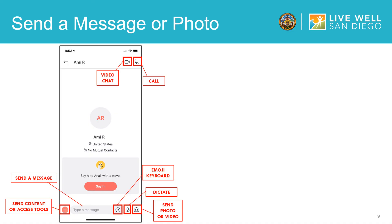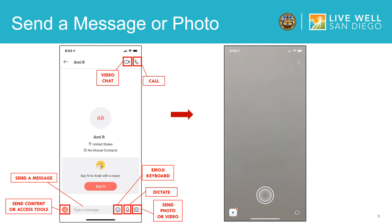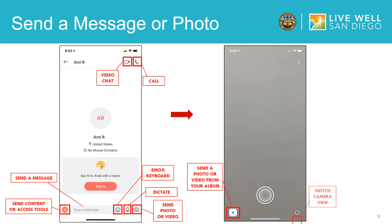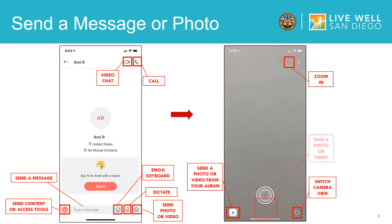When you select send photo or video, another screen will pop up. You can send a photo or video from your album, switch the camera view, zoom in, or take a current photo or video. You will select the X button in the upper left hand corner to exit the screen.